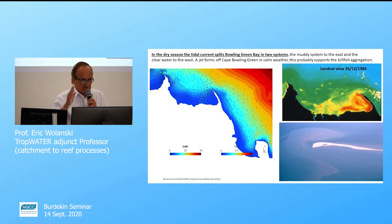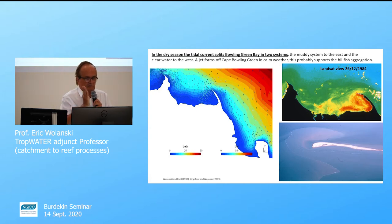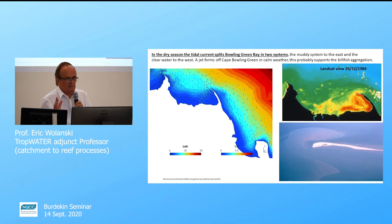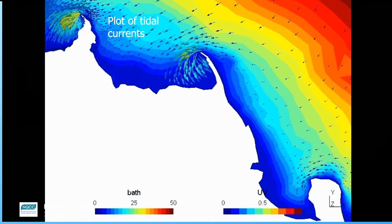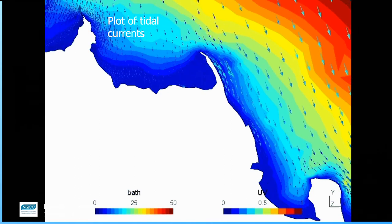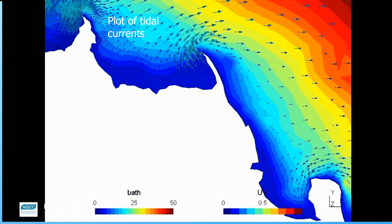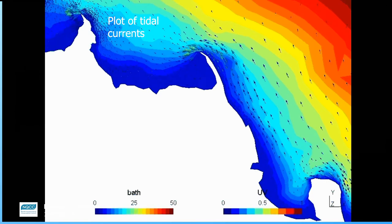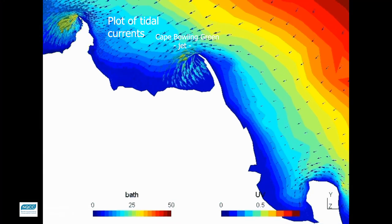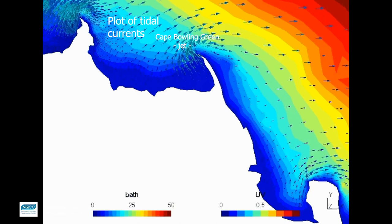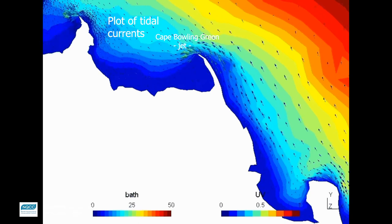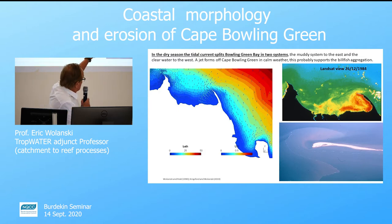In the dry season, there is very little outflow from the river. The tidal current splits Cape Bowling Green Bay. This is a plot of the tidal current in calm weather, once per hour, and it splits the bay into two systems: one system which is muddy to the east, and a system which is fairly clear water to the west. A tidal jet forms off Cape Bowling Green, which most likely supports the fish aggregation found there.